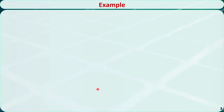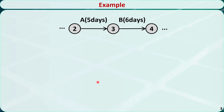Let's check some examples. This is a portion of a project network. Activity A starts at node 2 and ends at node 3; it lasts for 5 days. Activity B starts at node 3 and ends at node 4; it lasts for 6 days. Activity A must be completed before activity B can begin. Activity A is called the predecessor of activity B, and activity B is called the successor of activity A.